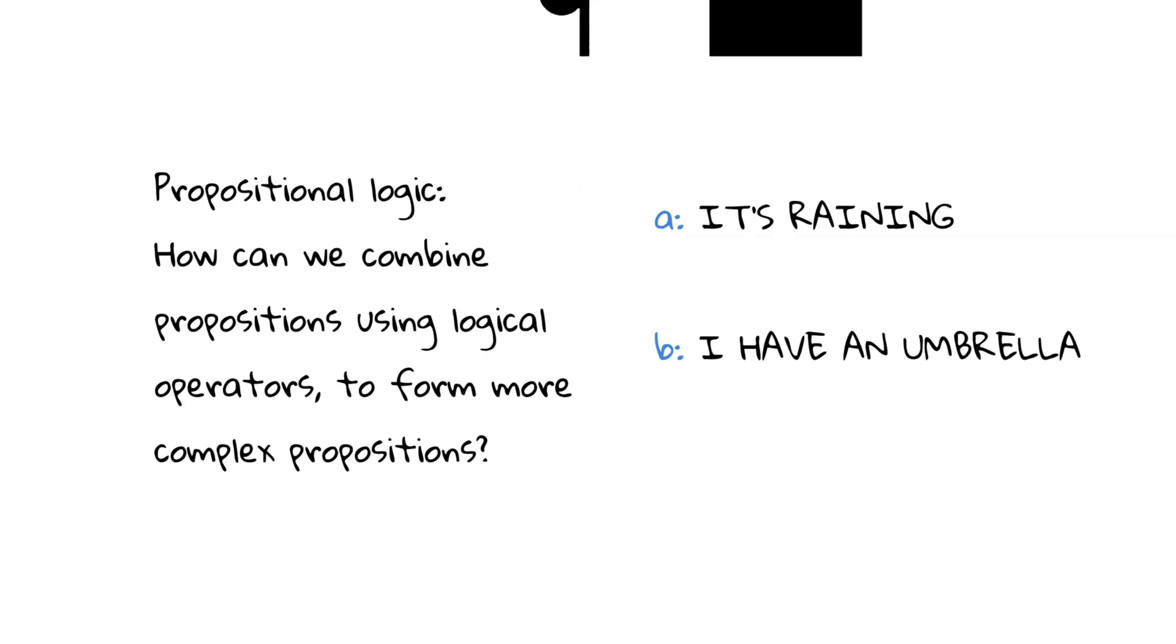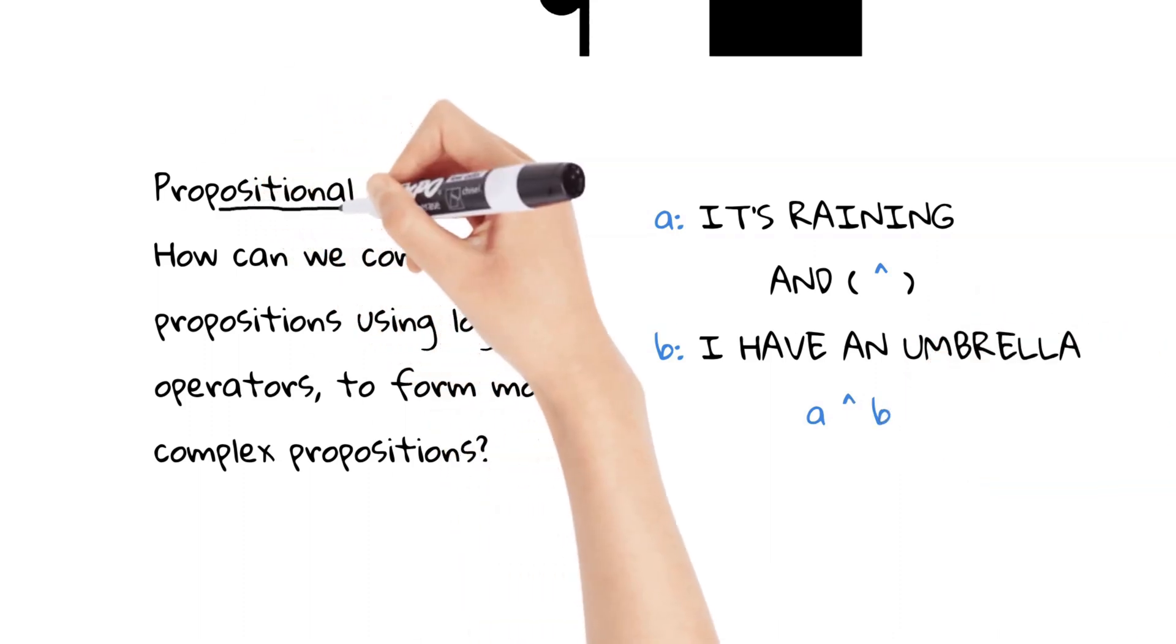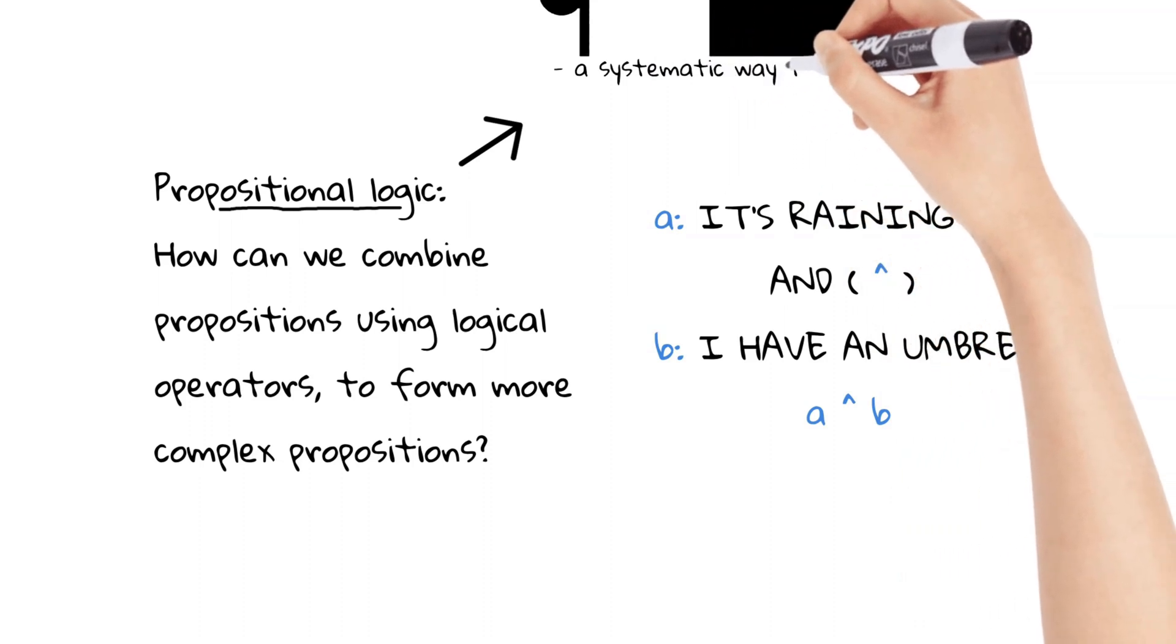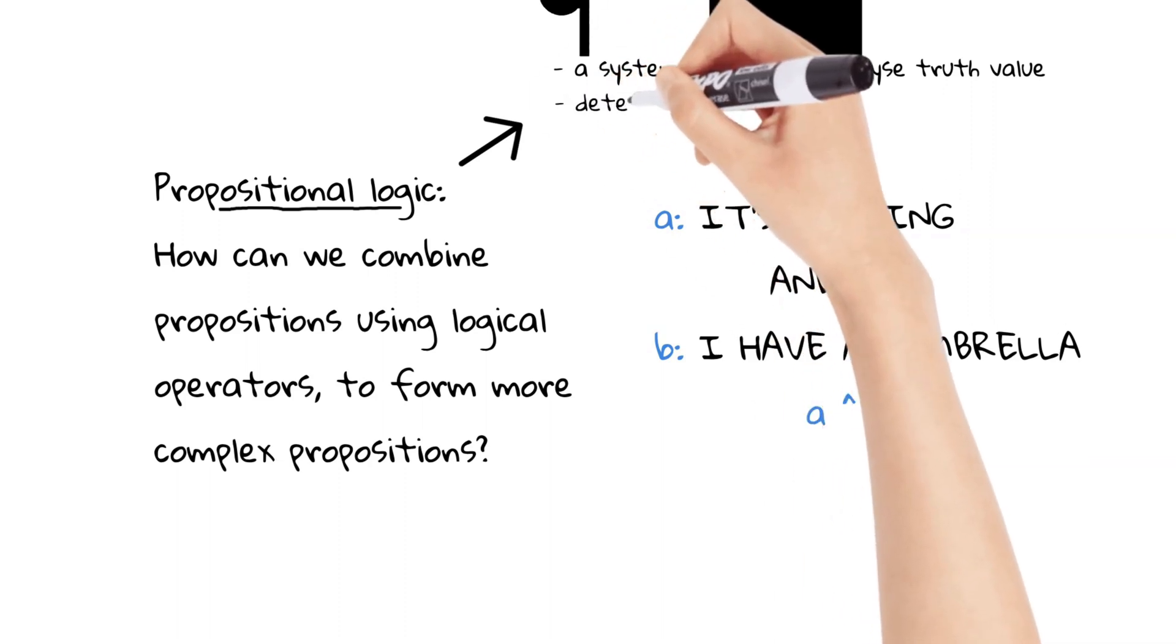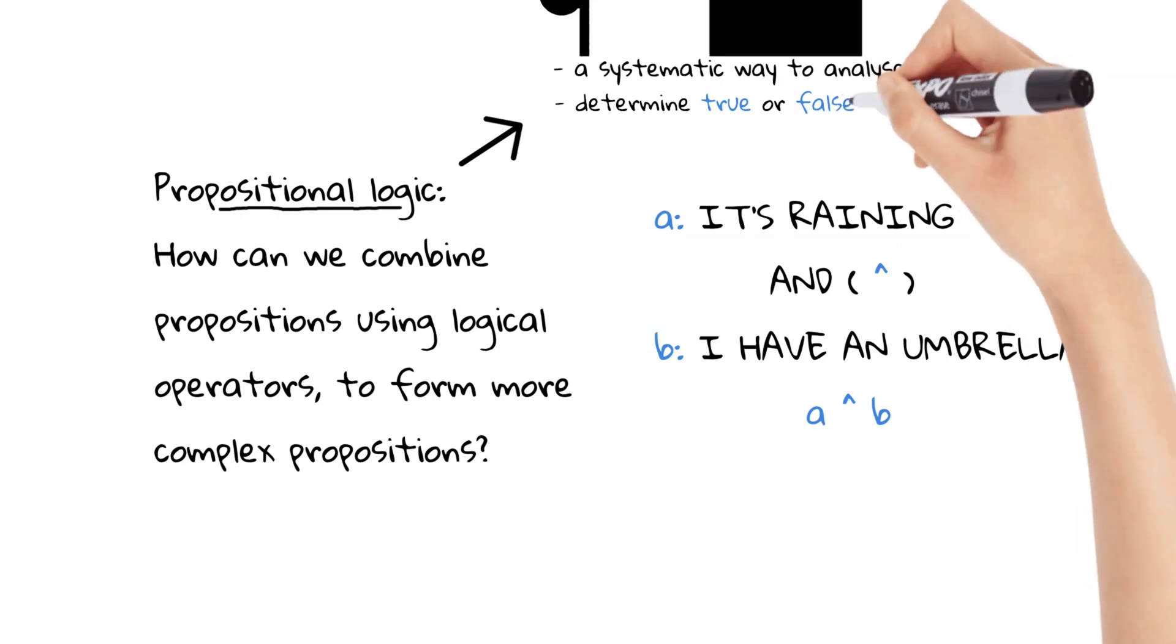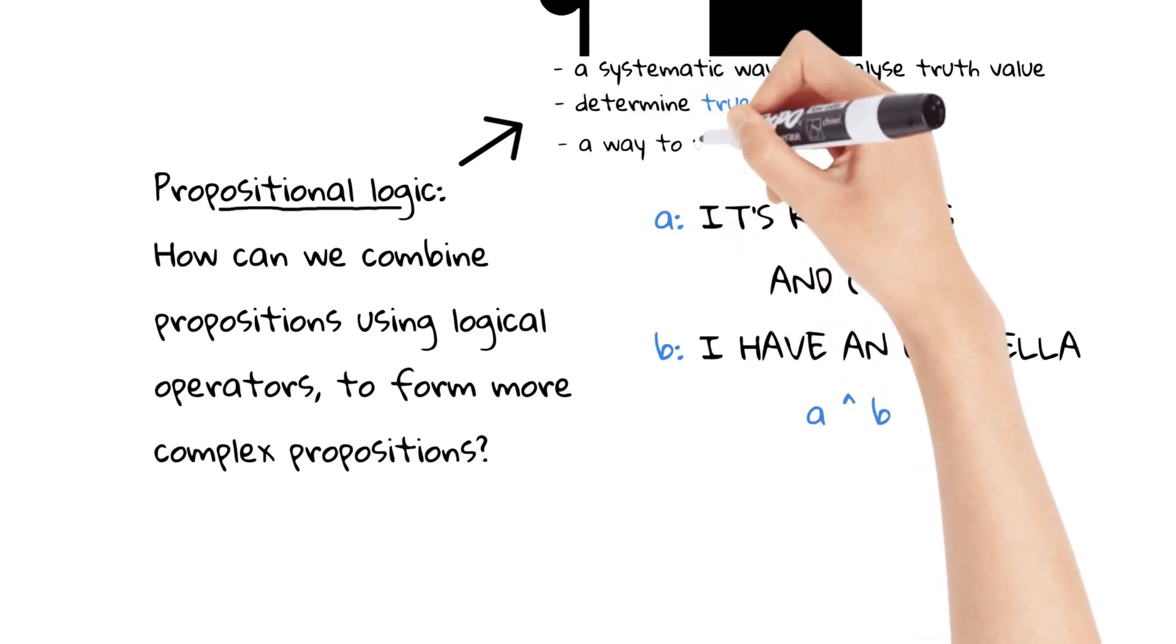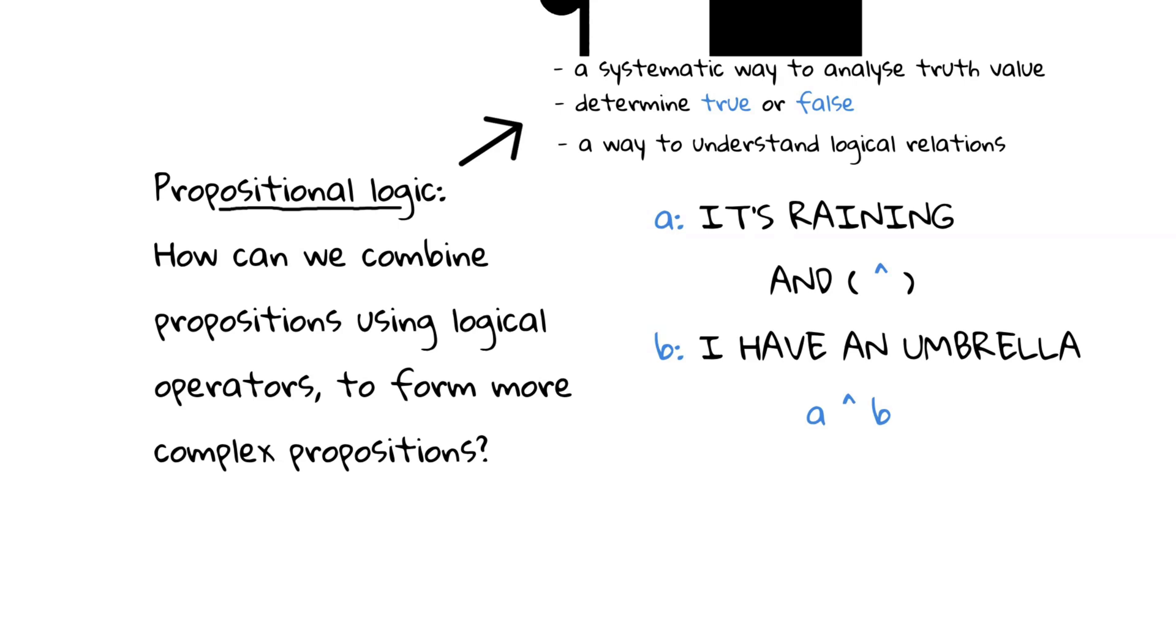These operators allow us to form compound propositions by connecting multiple individual propositions. For example, let's say we have two propositions: it is raining outside, and I have an umbrella. We can use the logical operator and to combine these propositions into a compound proposition: it is raining outside and I have an umbrella. Propositional logic provides a systematic way to analyze and reason about the truth values of compound propositions based on the truth values of their component propositions. It allows us to determine when a compound proposition is true or false, based on the logical relationships between the individual propositions and the logical operators used. In other words, propositional logic is a way of studying and understanding the logical relationships and operations between simple statements or propositions, helping us make sense of how these statements combine and influence the truth values of compound propositions.